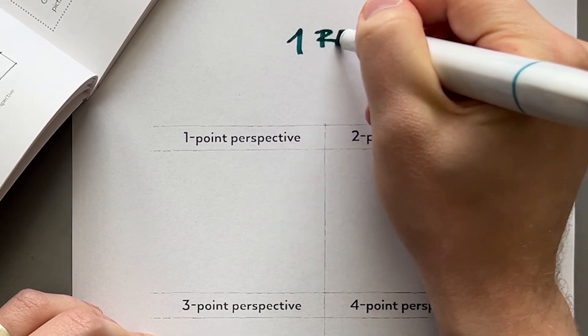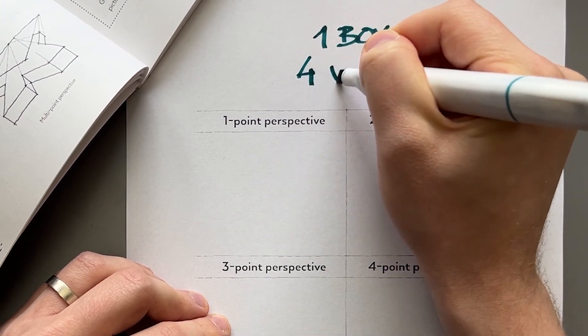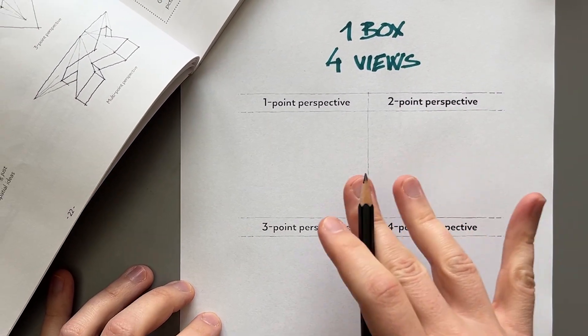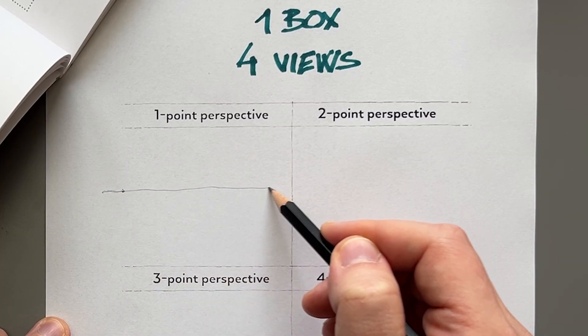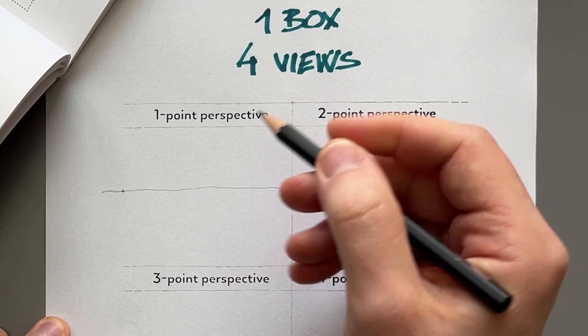Let's draw the same box in four different perspective views to see the difference between each type and when to use them. So let's start really simple with just one-point perspective.